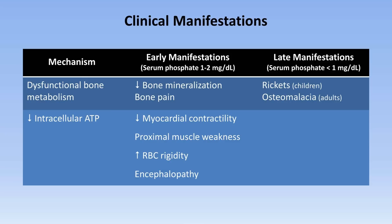As the phosphate level drops below 1 mg per deciliter, the patient may develop overt heart failure, rhabdomyolysis, hemolysis, and seizures and coma.